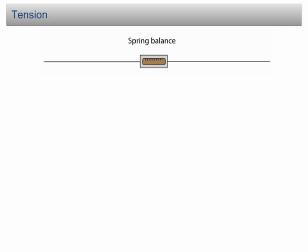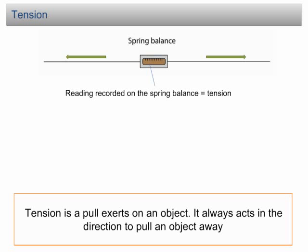Tension. Let's say a spring balance is tied to two strings. The two strings are pulled by two forces in opposite directions. The reading recorded on the spring balance is called the tension of the spring. Tension is a pull exerted on an object; it always acts in the direction to pull an object away.